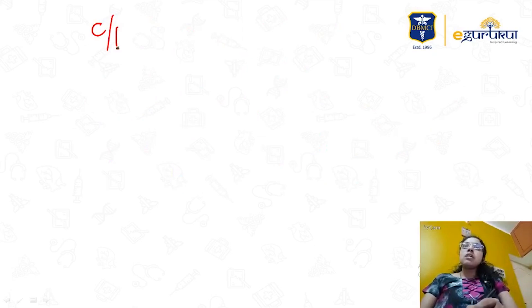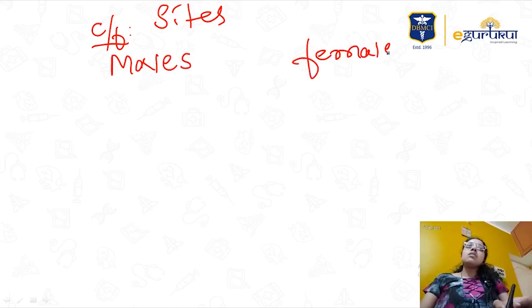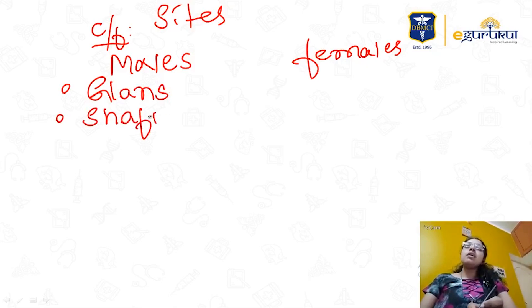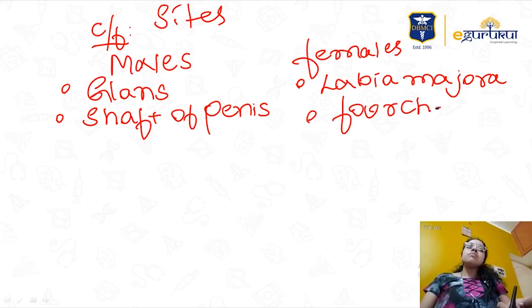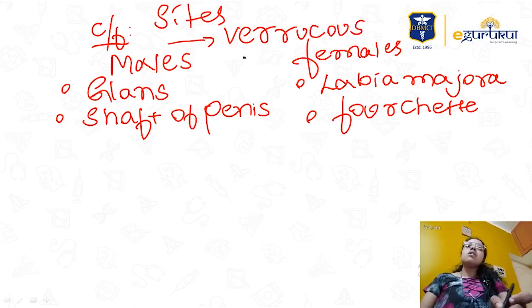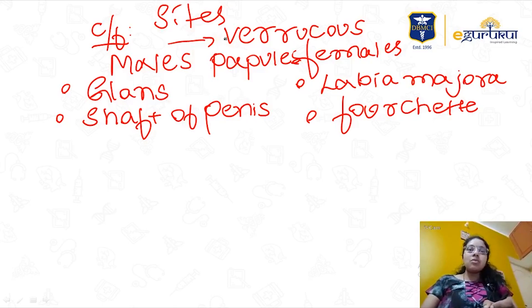The most common HPV types are 6 and 11. Most common sites — in males: glans and shaft of penis; in females: labia majora and fourchette. The lesion presents as multiple verrucous papules with a verrucous surface over these sites, with history of sexual contact.